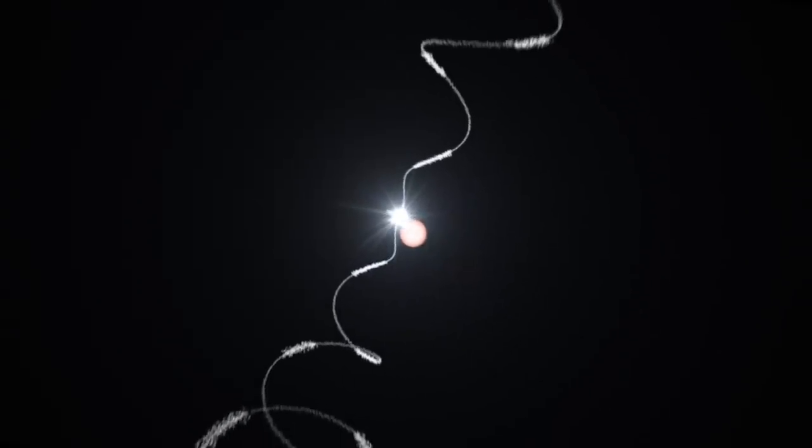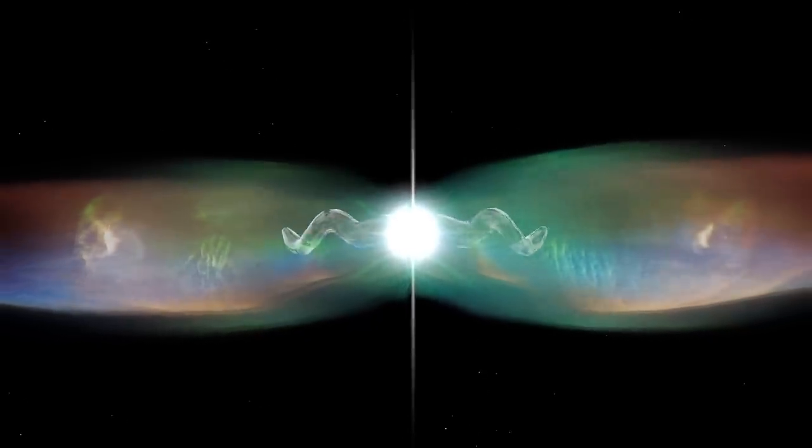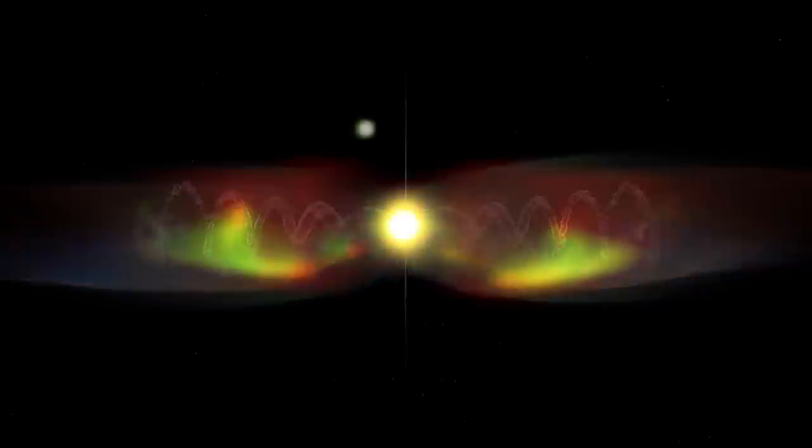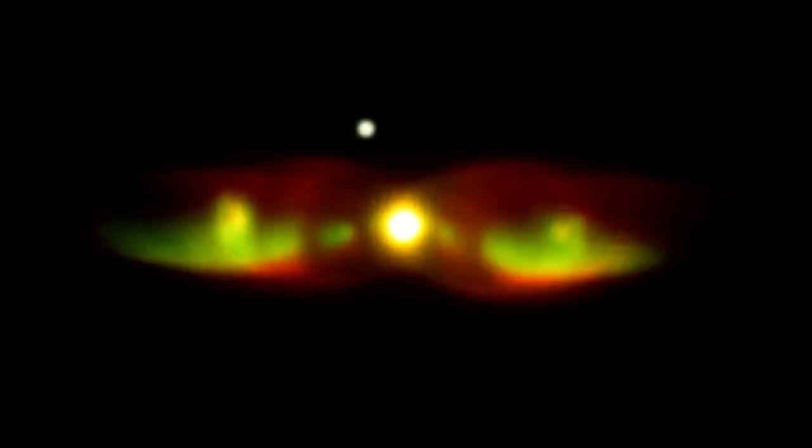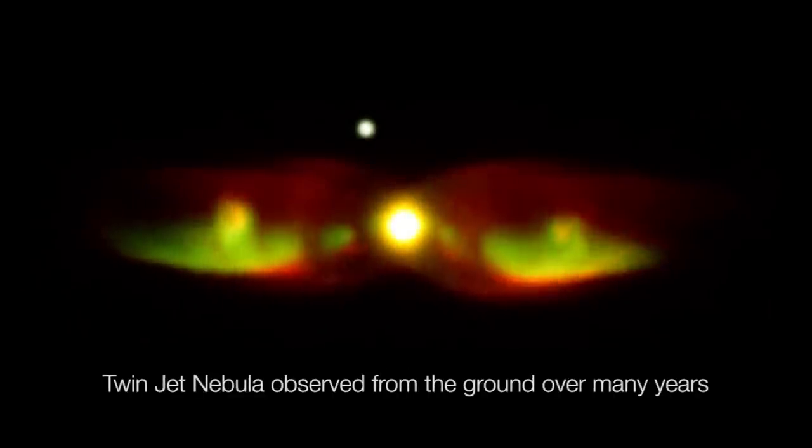As they travel, they slowly change their orientation over time, twisting slowly through space like water from a garden lawn sprinkler. This phenomenon is again thought to be attributable to the duo of stars orbiting at the nebula's centre.